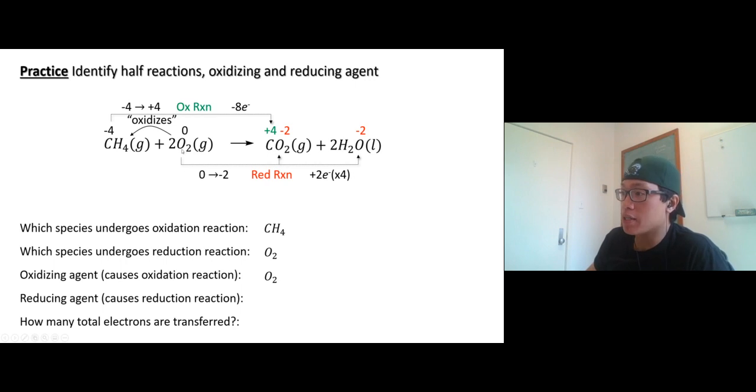Reducing agent: who goes through reduction? Oxygen goes through reduction by itself, it's not going to go reduction. Someone else has to make it happen. Methane makes oxygen go through reduction, so methane reduces oxygen. So methane is a reducing agent. How many electrons are transferred? Eight electrons.